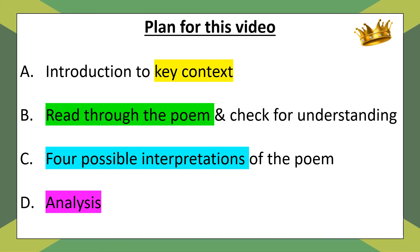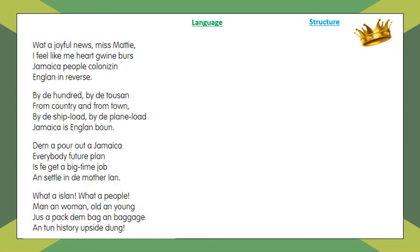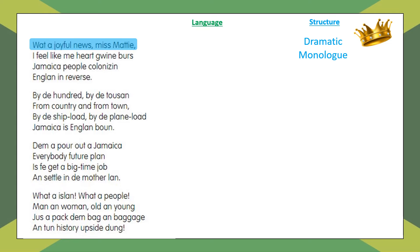Let's now go through the poem and pick out some language and structural comments useful for an exam, thinking about how each quote could support one of those different interpretations. The poem is a dramatic monologue — one person, possibly Louise Bennett or Miss Lou herself, talking to their friend Miss Matty. You could argue the dramatic monologue personalises this experience — is it a personal expression of joy about this new opportunity, or a personal criticism of historical colonisation?